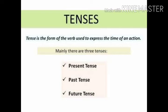The tense is the form of the verb used to express the time of an action. Mainly, there are three tenses: present tense, past tense, and future tense. We will see each one of these tenses one by one.